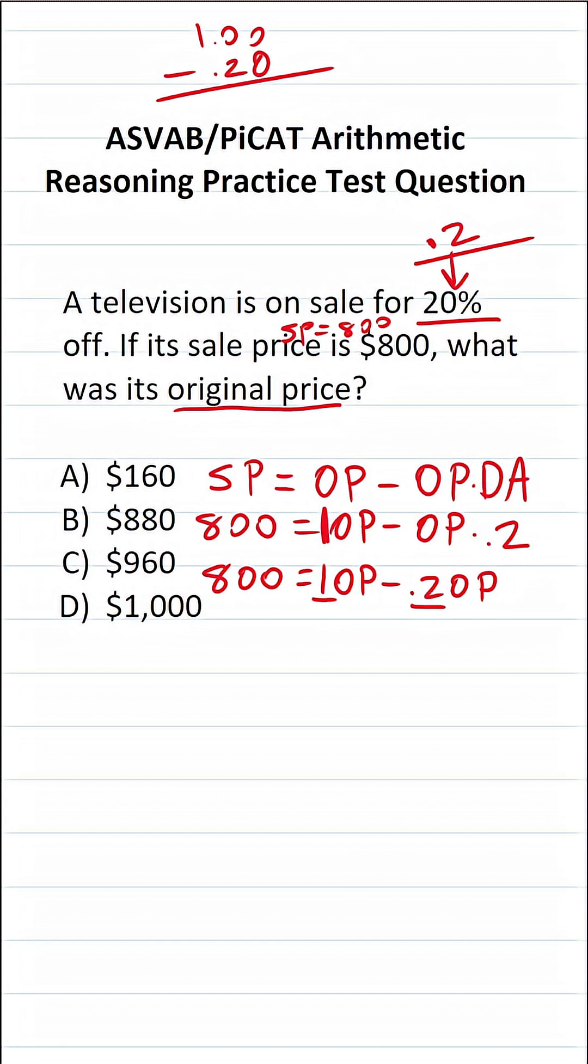There's a 0 here. 0 minus 0 is 0. 0 minus 2, we can't do. We have to borrow. This becomes 0, this becomes 10. 10 minus 2 is 8. Drop down our decimal. 0 minus nothing is 0.